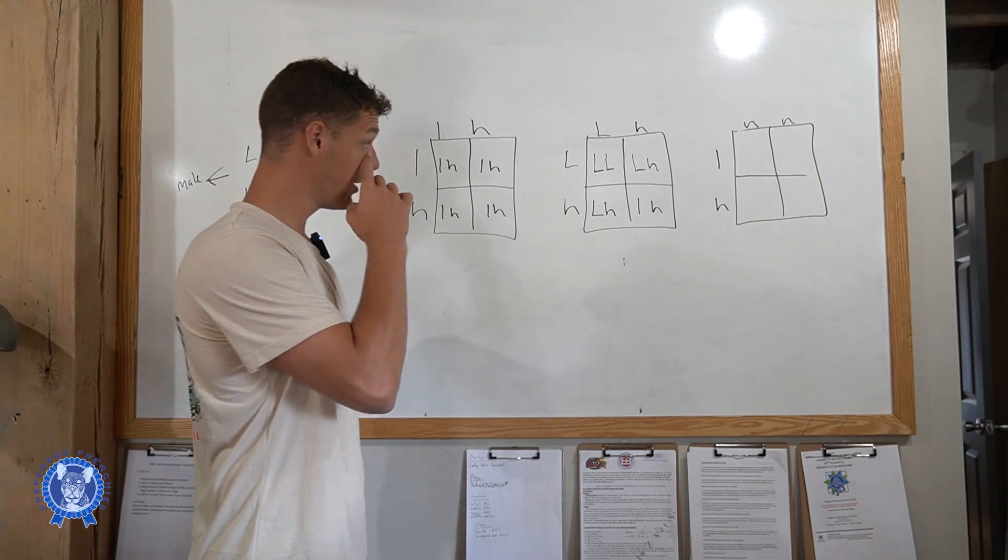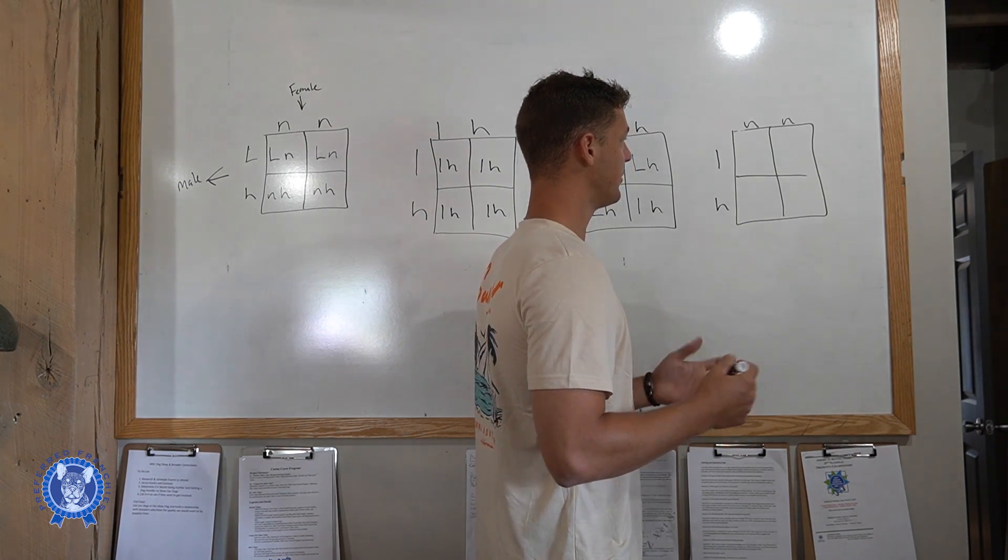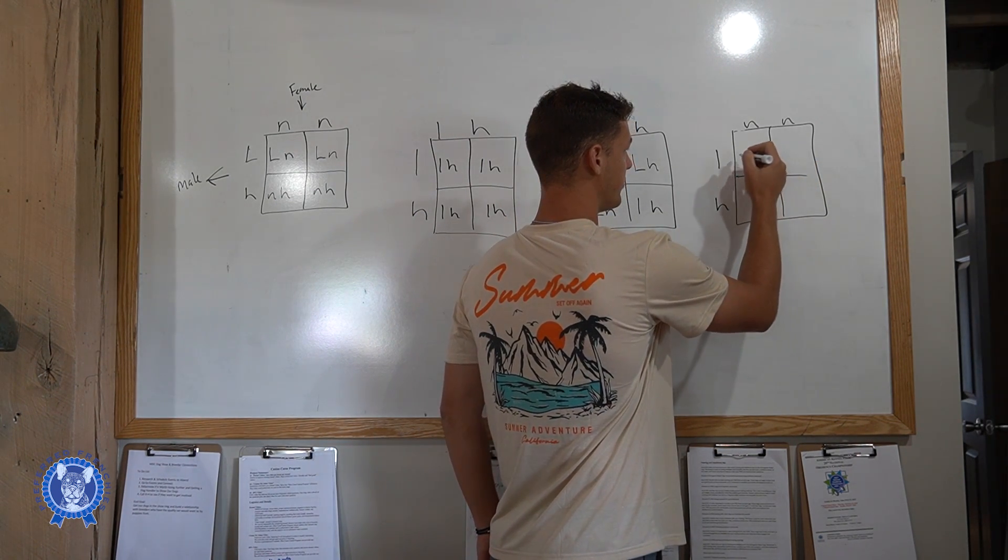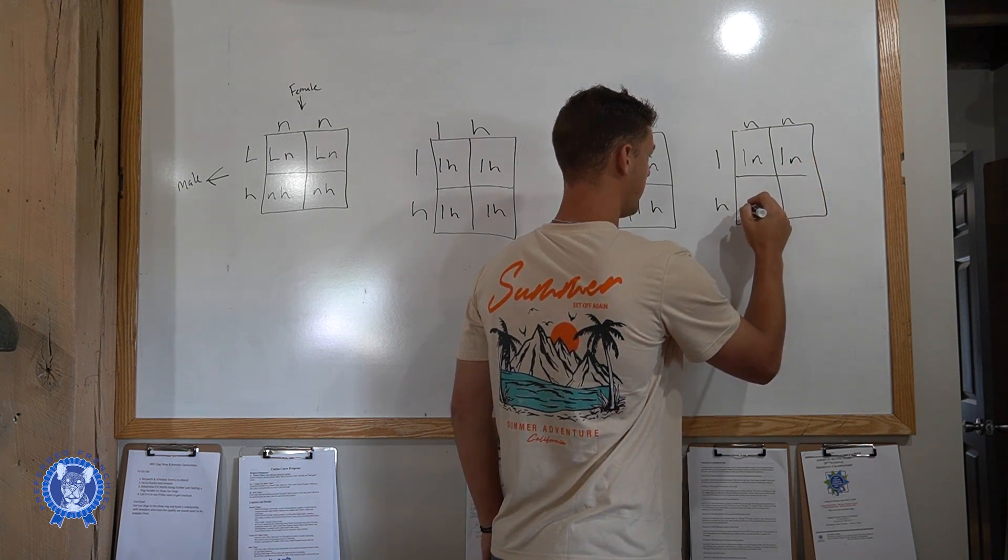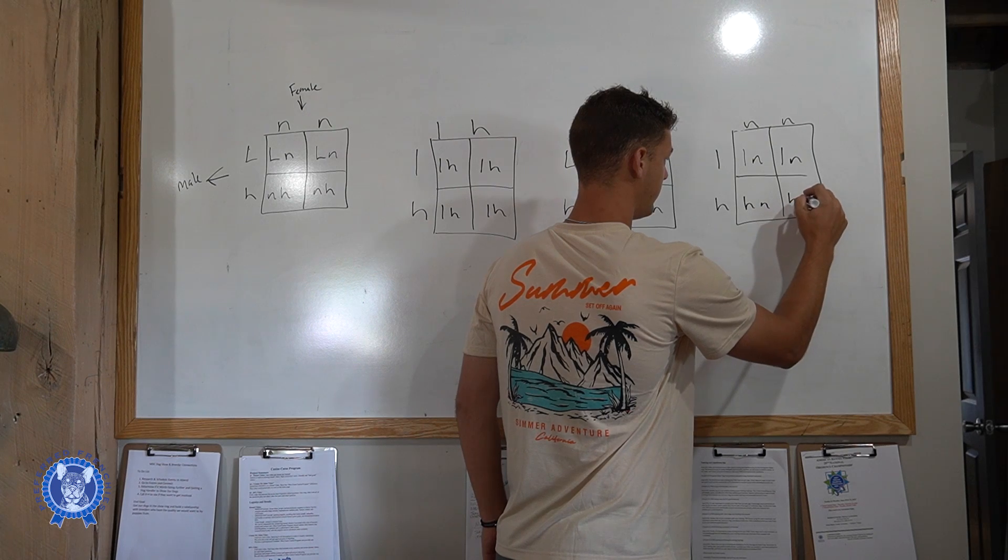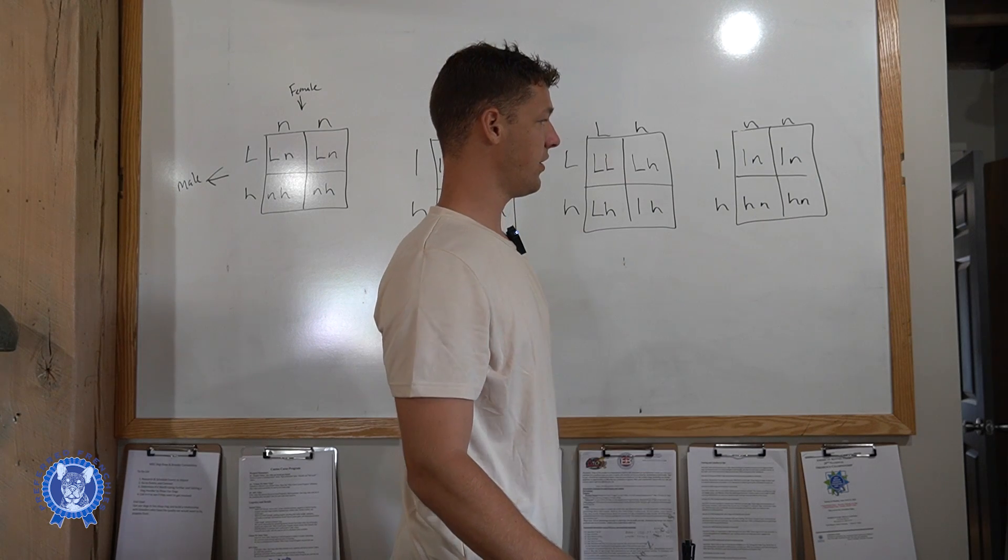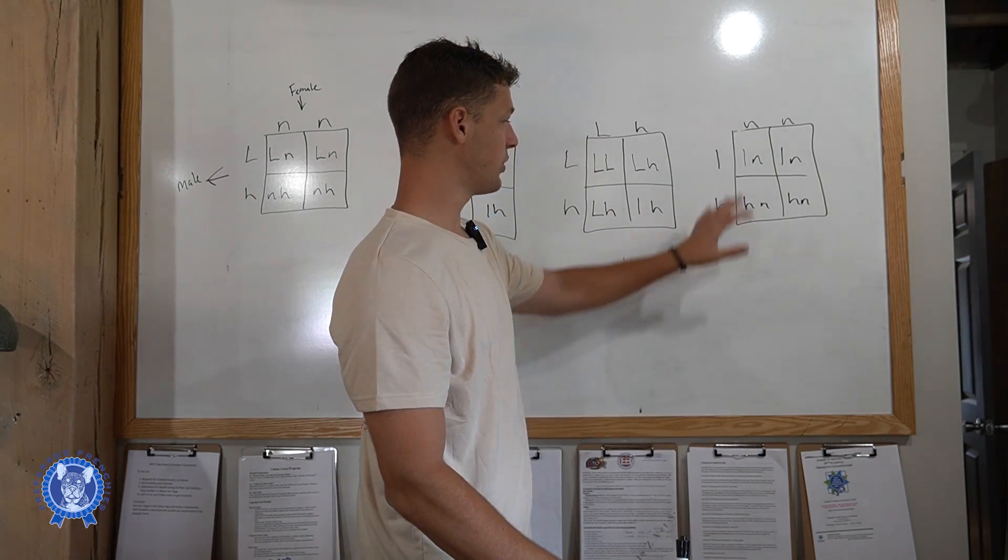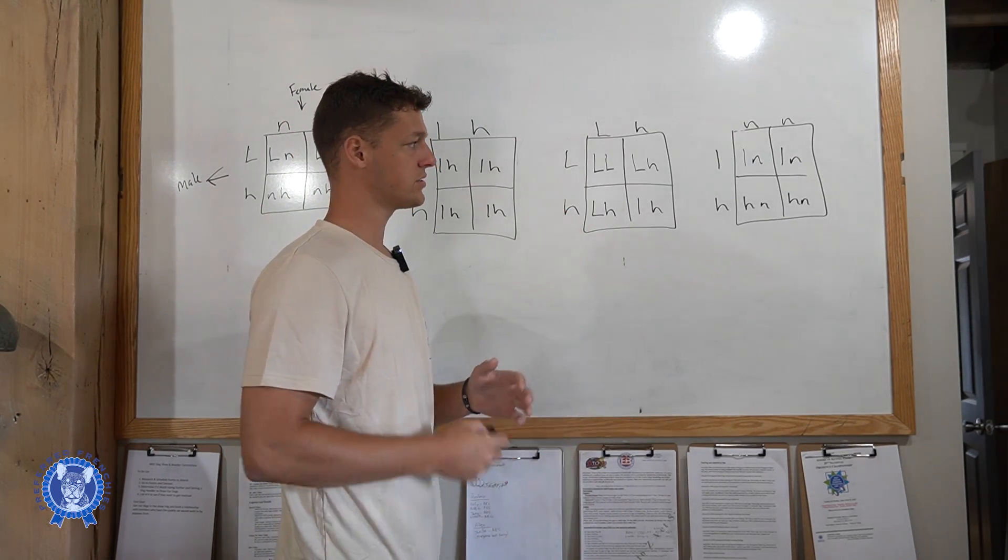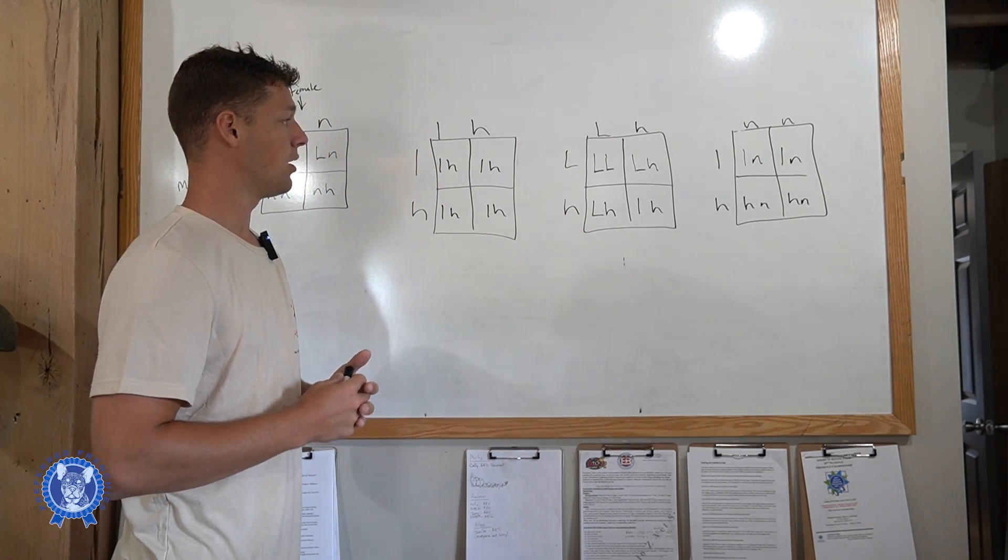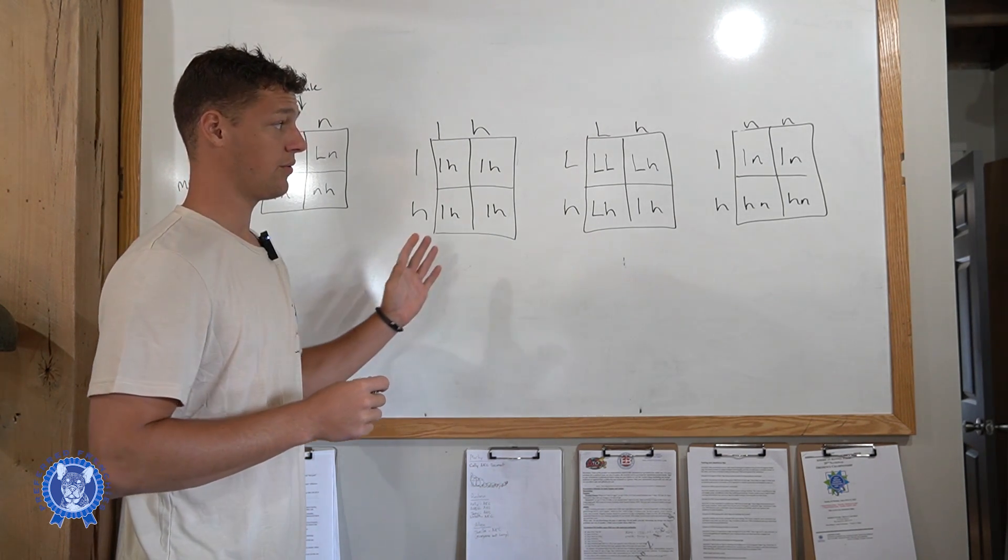But you kind of get a good visualization of what that could potentially look like. And then moving on here, you got a full fluffy Frenchie bred to a non-fluffy. This is just pretty straightforward. So you got LN, LN, you got HN, HN, kind of confusing with the H and N there. But yeah, so you got all fluffy carriers out of that group. Since one of the parties is full fluffy bred to a non-fluffy, you get full fluffy carriers throughout. You don't have the opportunity of having a full fluffy, but you do have a really good, you know, obviously everyone would be a fluffy carrier.